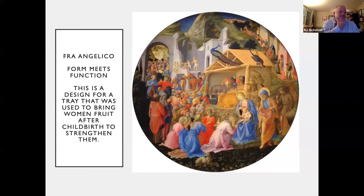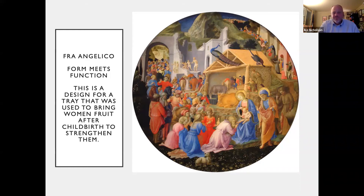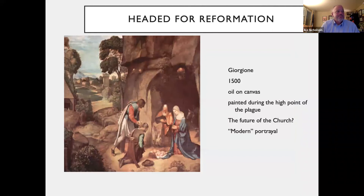Fra Angelico is where form begins to meet function. This isn't a painting you would hang on a wall — this is a tray that they would use to place fruit on to bring to women after they had given childbirth, to help them regain their strength. So you'd have bunches of grapes, apples, and pomegranates on this tray, and as you ate the fruit, the scene by the great artist Fra Angelico would be revealed. Joseph also begins to change in the Renaissance — now he's not this old guy sitting off to the side sad; he's really a more involved husband. This also comes from the visions of St. Bridget, where he's trying to build a fire and prepare a meal for his wife.